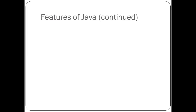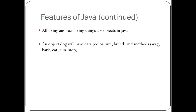In Java, all living and non-living things are treated as objects. For example, an object 'dog' will have data such as color, size, and breed, and it will also have methods like wag, bark, eat, run, and stop. This is an example of how Java treats things as objects — it could be living as well as non-living.